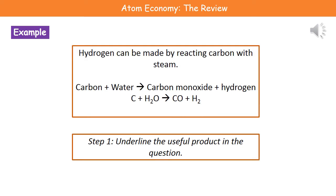Now let's go through how to carry out this calculation with an example. Hydrogen can be made by reacting carbon with steam. The word equation is: carbon plus water makes carbon monoxide and hydrogen. Step one is to identify what the useful product is in the question. As an exam tip, underline it in the question so you remember. In this case, hydrogen is our useful or desired product.